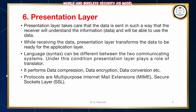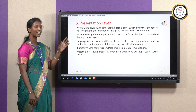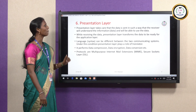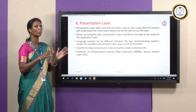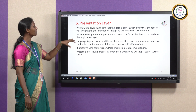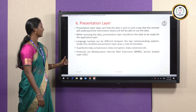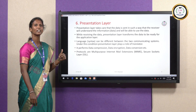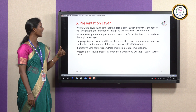The sixth layer is the Presentation Layer. The presentation layer takes care that data is sent in such a way that the receiver will understand the information and will be able to use it. The presentation layer will check whether the user is understanding the information or not. While receiving the data, the presentation layer transfers the data to be ready for the application layer. The role of this presentation layer is like that of a translator, since the language syntax can be different between two communication systems. It performs data compression, data encryption, and data conversion.